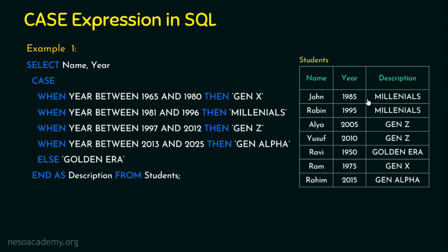The output contains three columns: name, year, and description. For example, John with year of birth 1985 gets the description 'Millennials' since 1985 falls between 1981 and 1996. Alia with year 2005 gets 'Gen Z' since 2005 is between 1997 and 2012. Ravi with year 1950 doesn't match any of the first four conditions, so he gets 'Golden Era' from the else part.